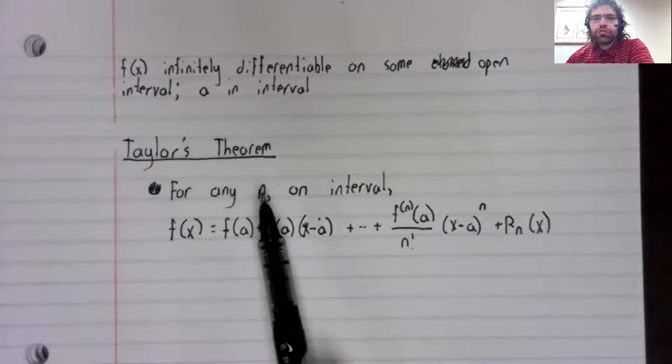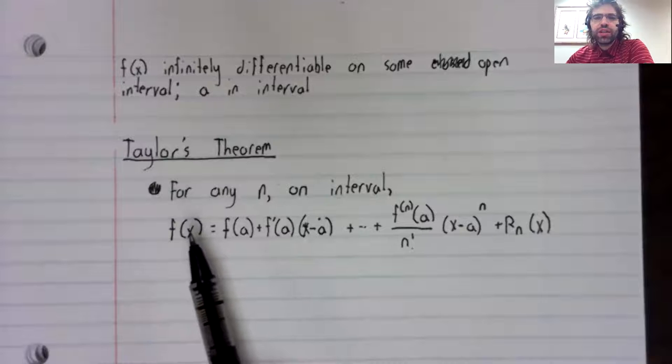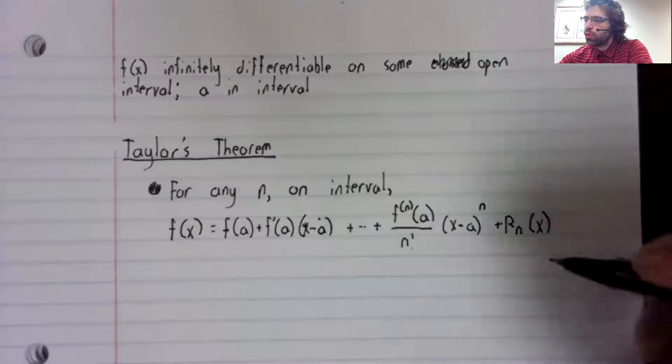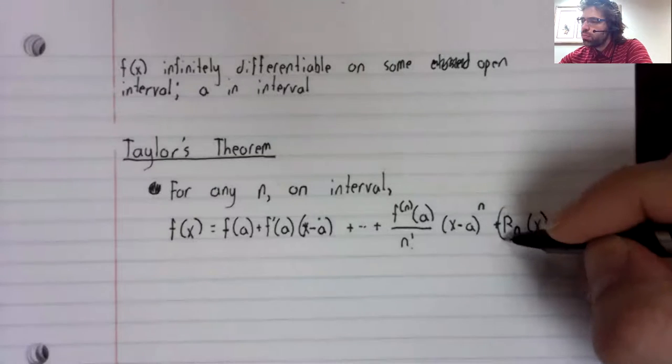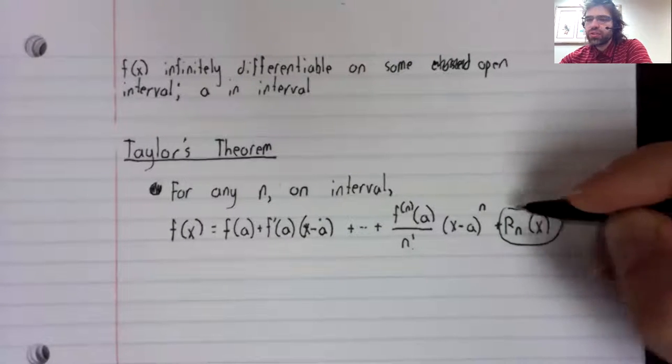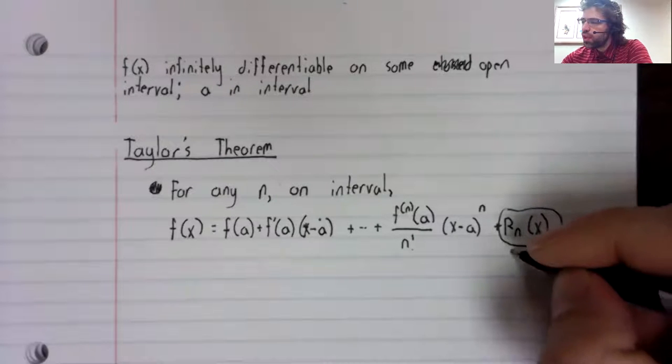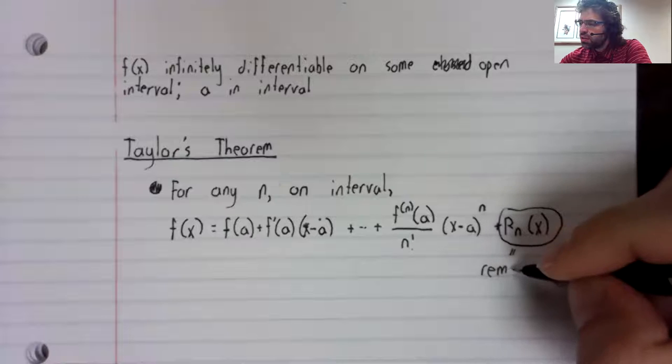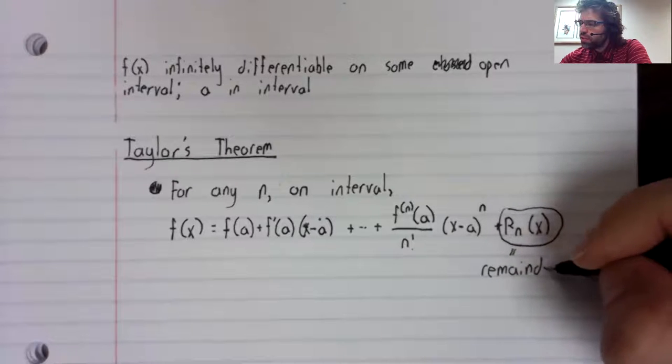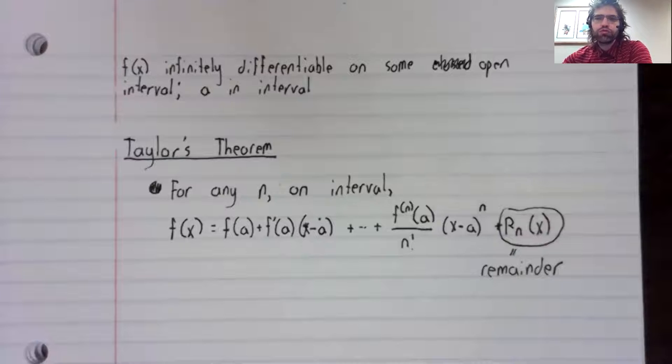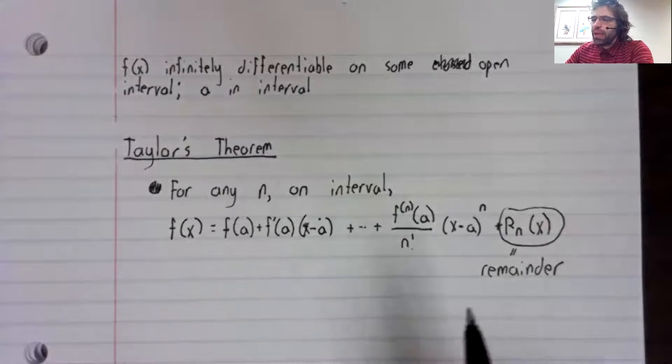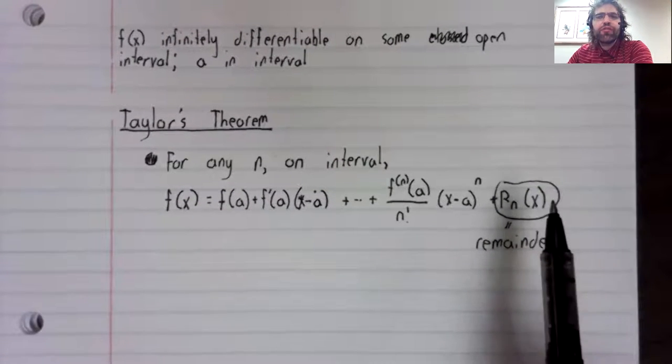We state part of Taylor's theorem. For any natural number n, this function equals the nth order Taylor polynomial. The r stands for remainder. And this remainder has a certain form.